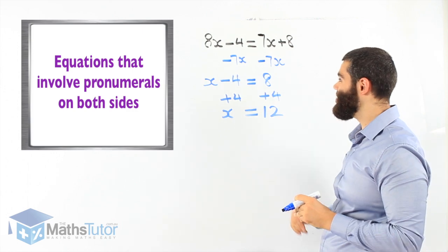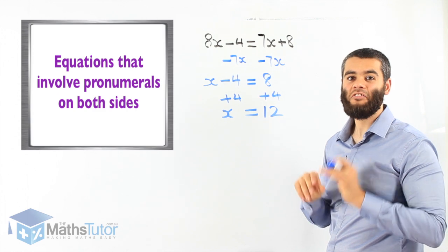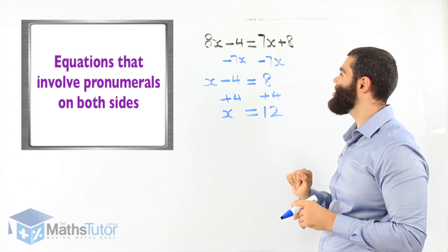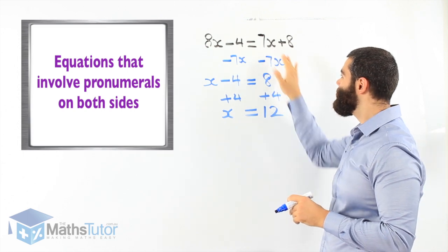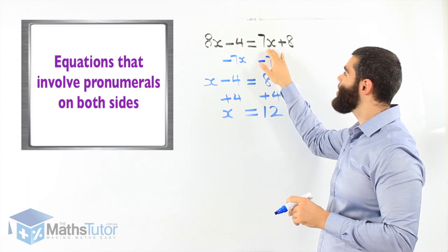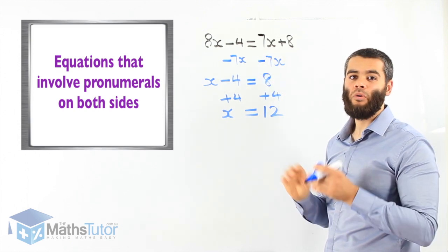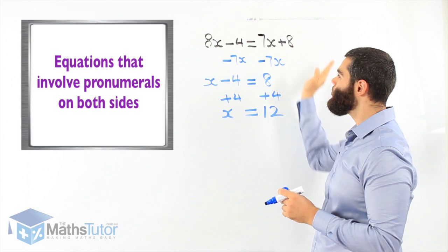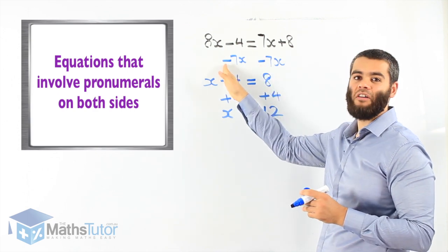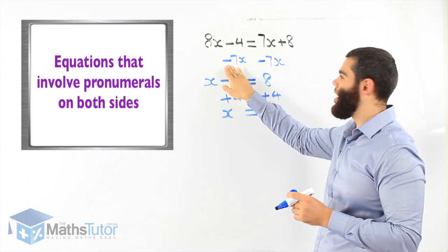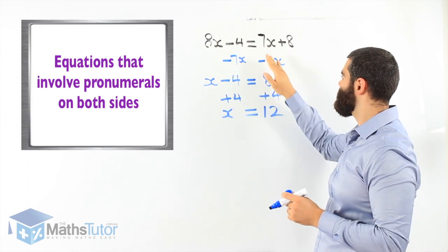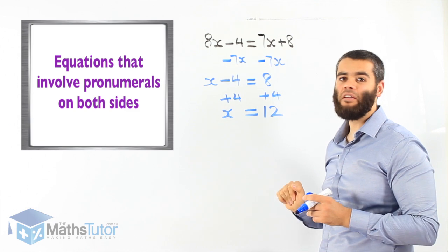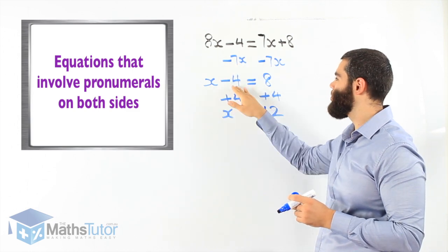So let's go through it one more time. 8x minus 4 equals 7x plus 8. We would like to move the 7x to the other side — we're eliminating it. What we do to one side, we have to do to the other side: minus 7x, minus 7x. 7x take away 7x, we're left with 8. 8x take away 7x, we're left with x minus 4.